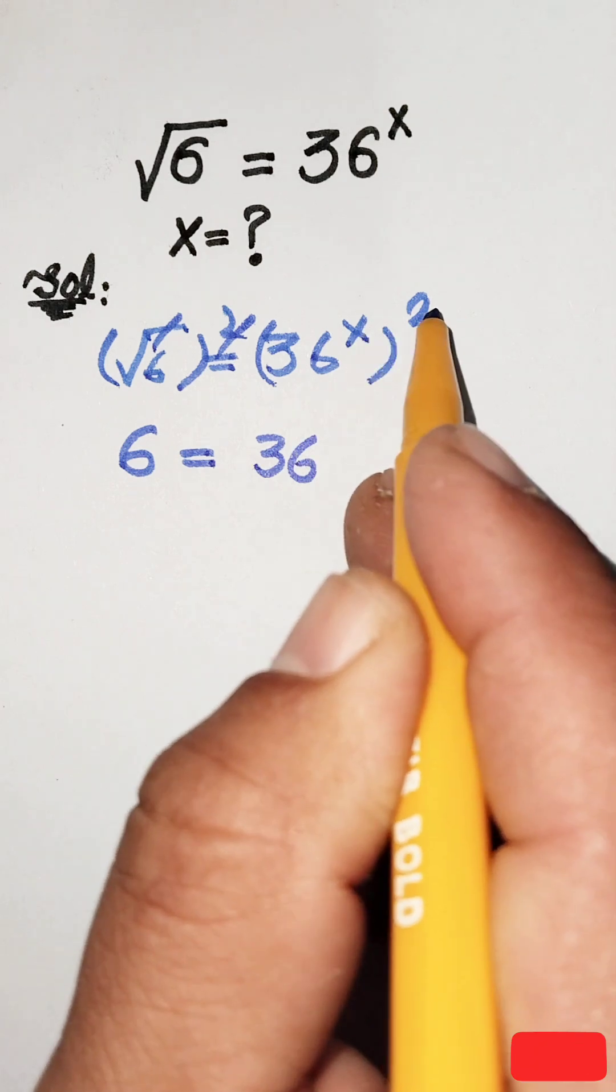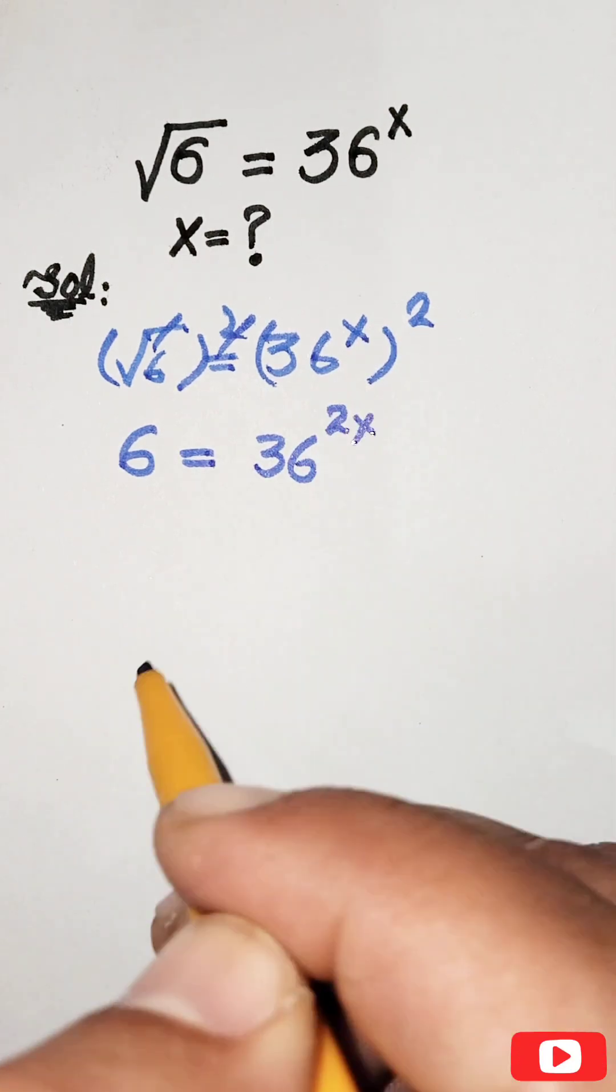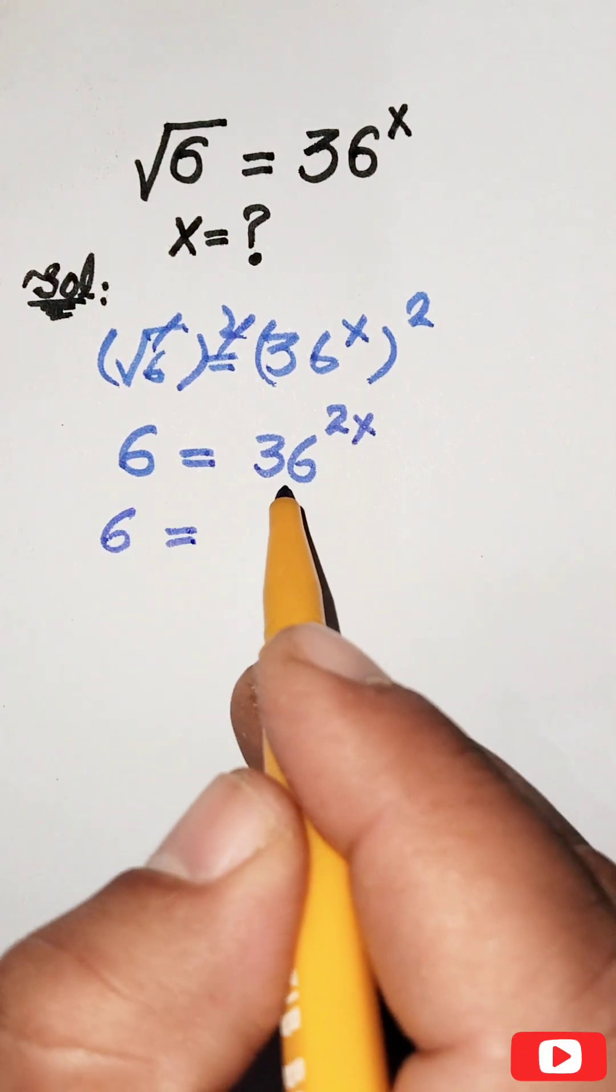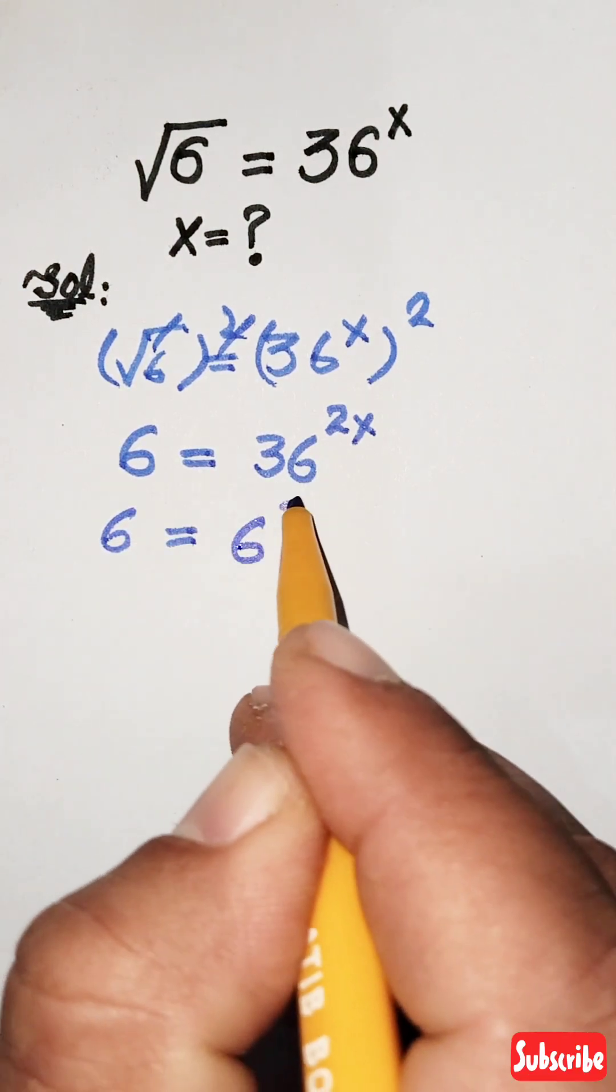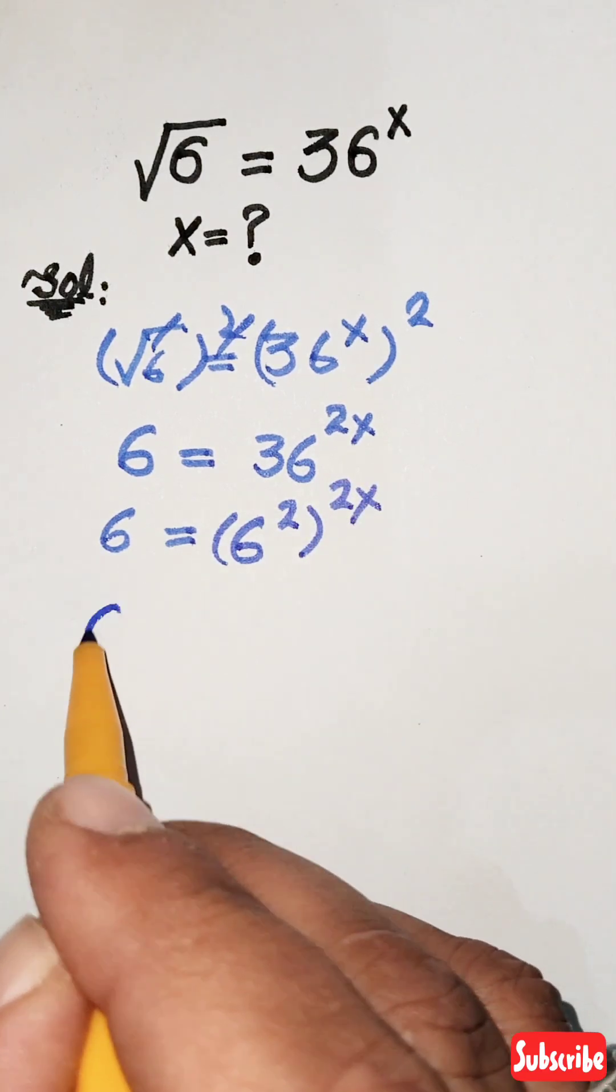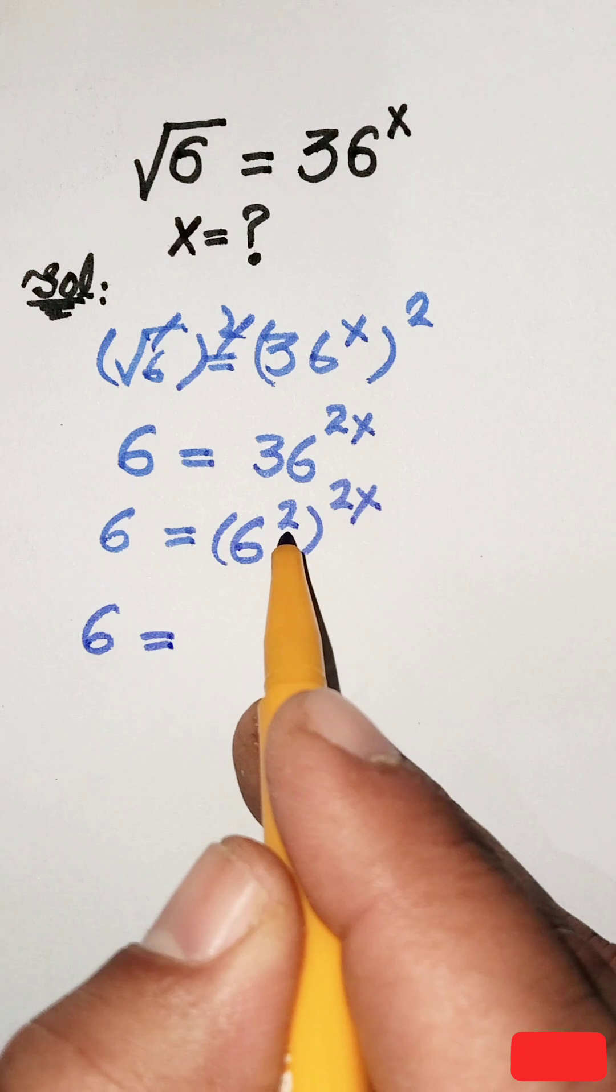Now 36 can be written as 6 squared, so we have 6 squared to the whole power 2x. Then 6 equals 6 to the power 4x, since 2 times 2x equals 4x.